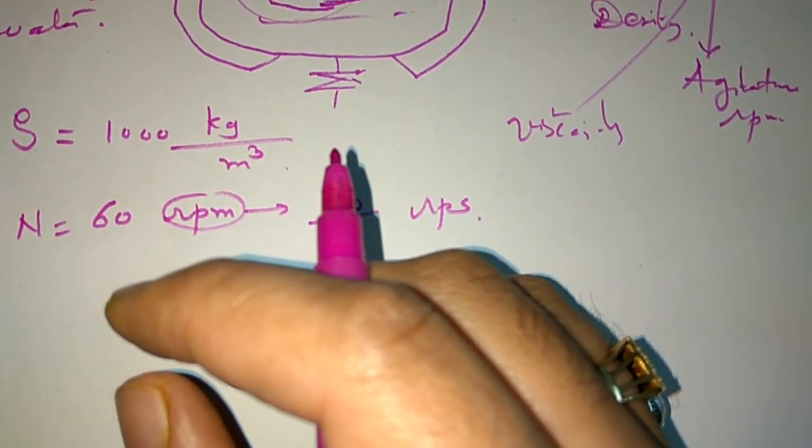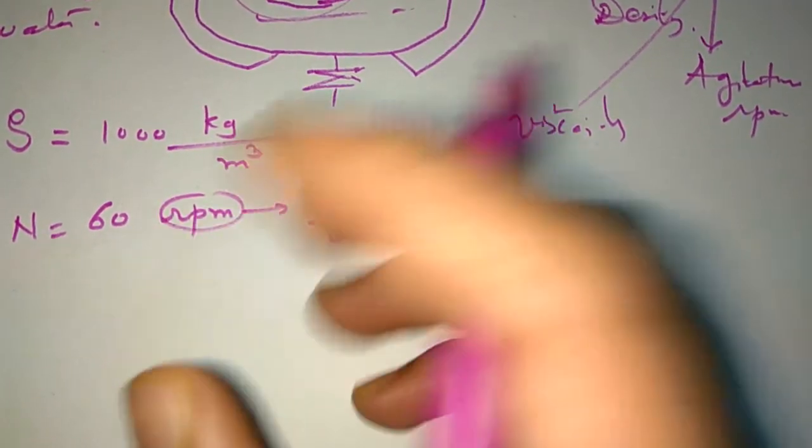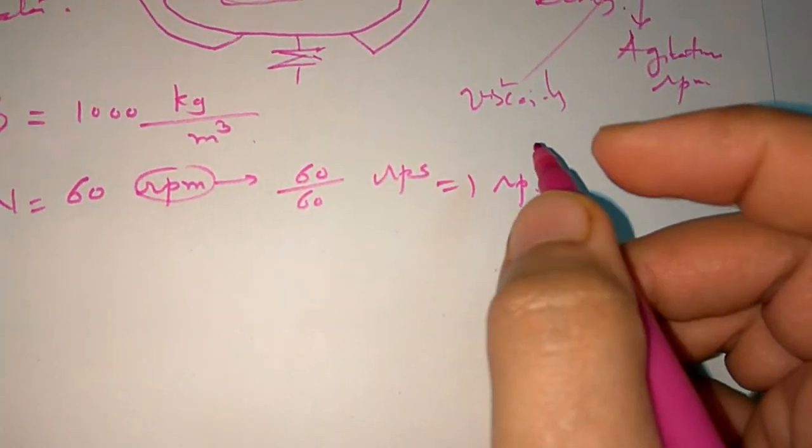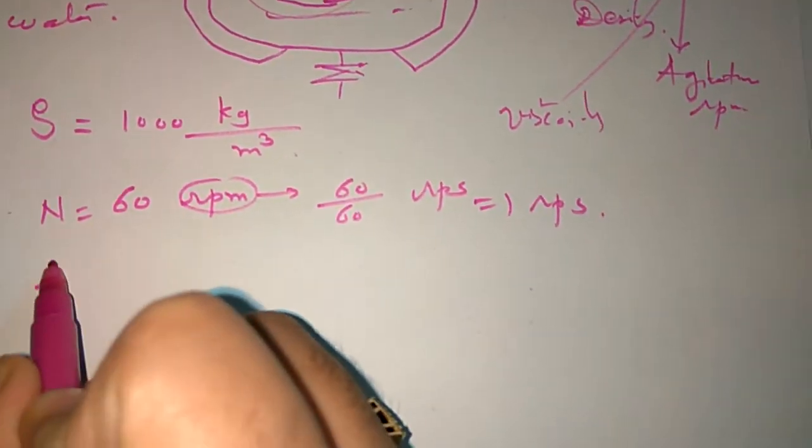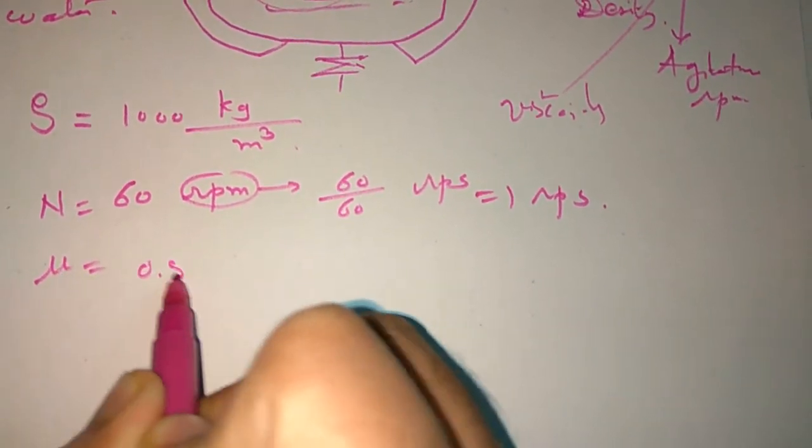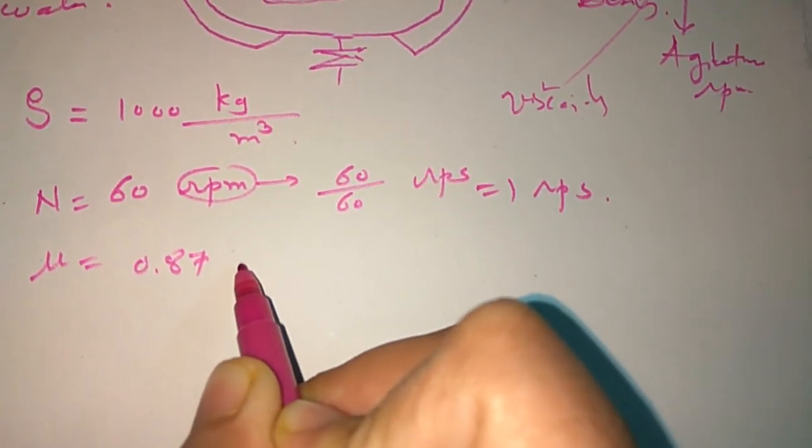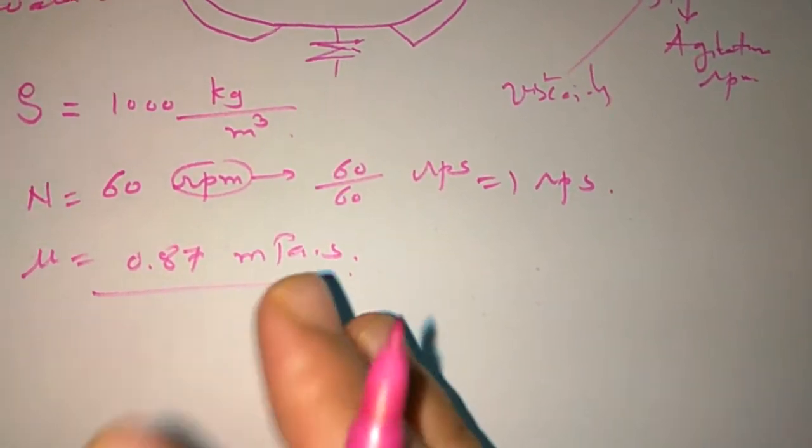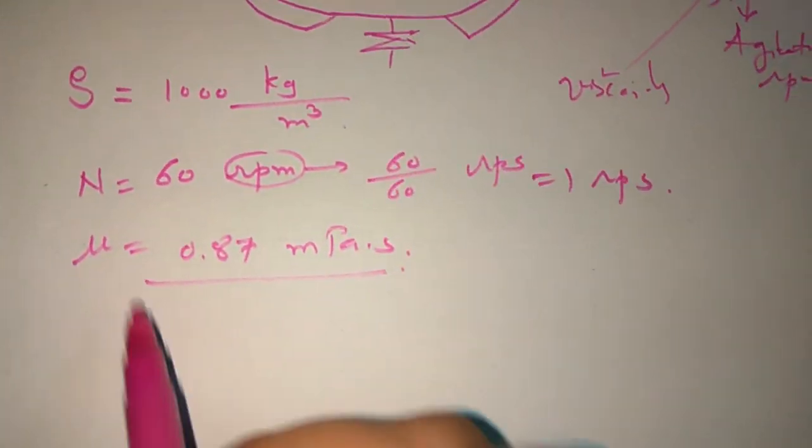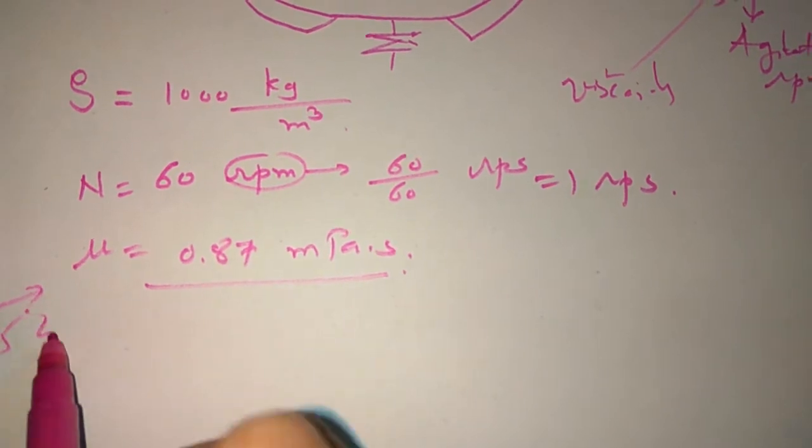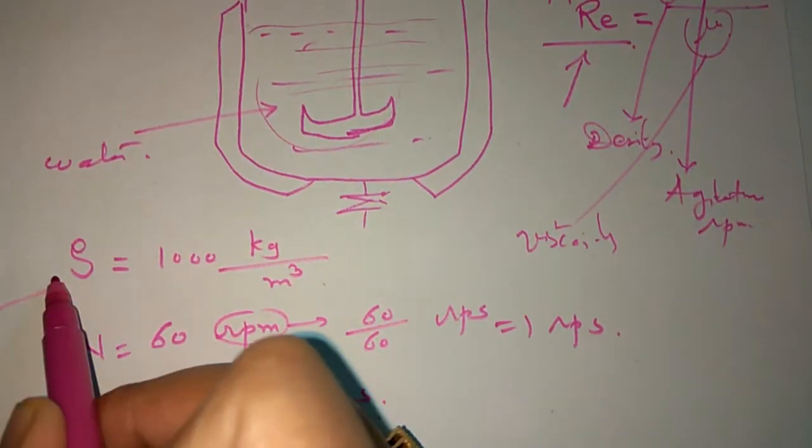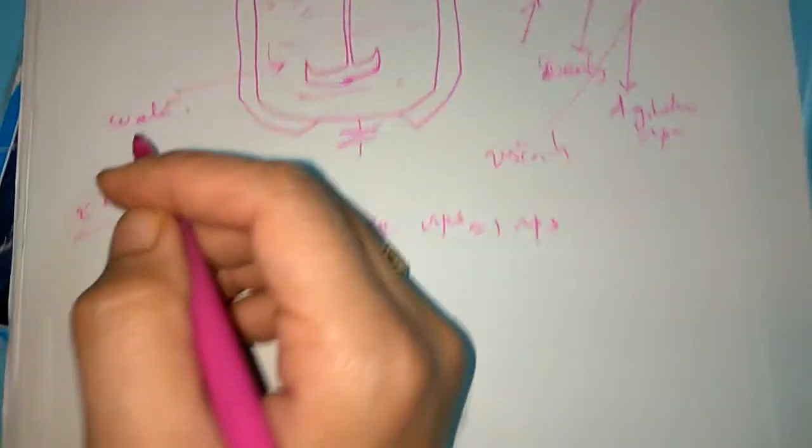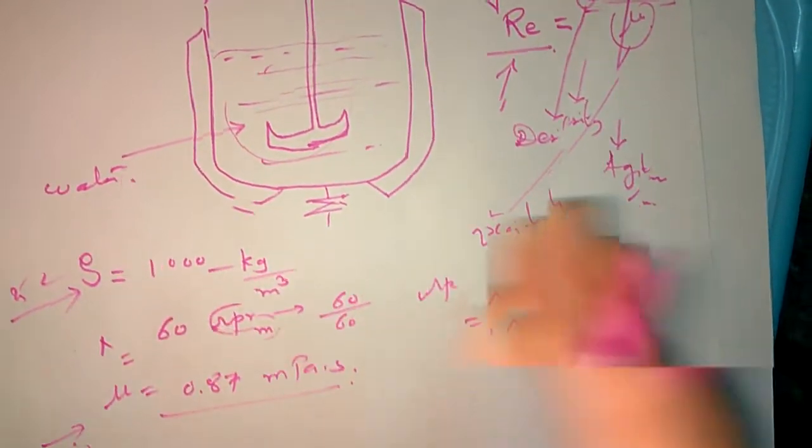Because we are taking here SI units, so we divide 60 RPM divided by 60, so we will get 1 RPS, rotations per second. Now mu is equal to 0.87. This is millipascal second. This is the unit we take, this is water property at 25 degrees centigrade.